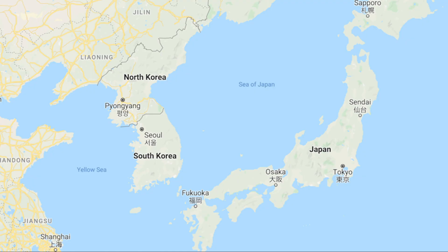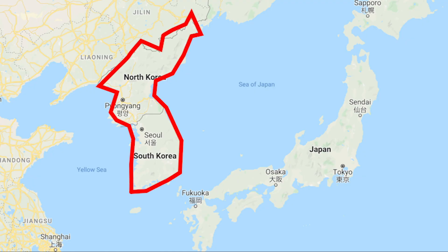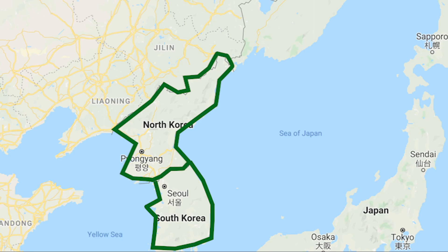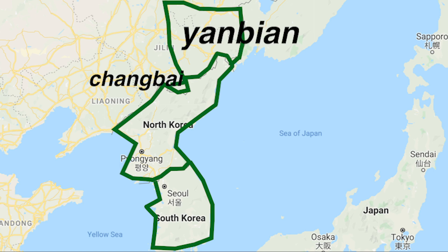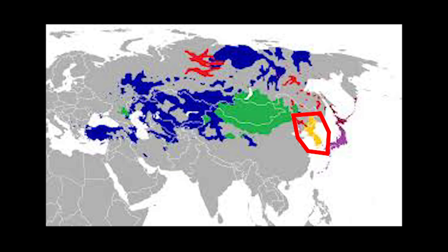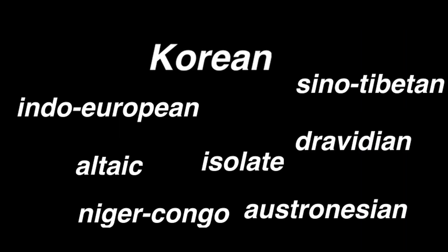Korean is a language isolate spoken in North and South Korea. It has around 77 million native speakers and is an official language in North Korea, South Korea, and some provinces in China. The roots of Korean are under heavy debate because no one really knows what languages it's related to. Some believe it's part of the widely discredited Altaic family, some say it's Austronesian, some say it's Dravidian, but Korean is usually classed as a language isolate even though it does have some extinct relatives.